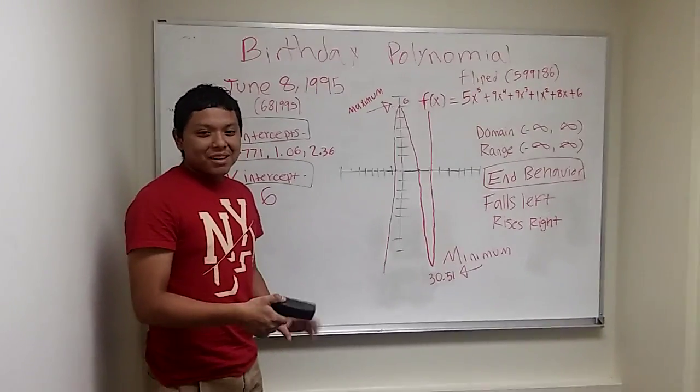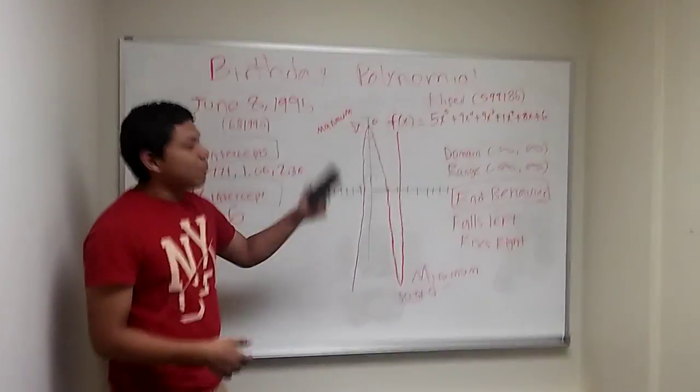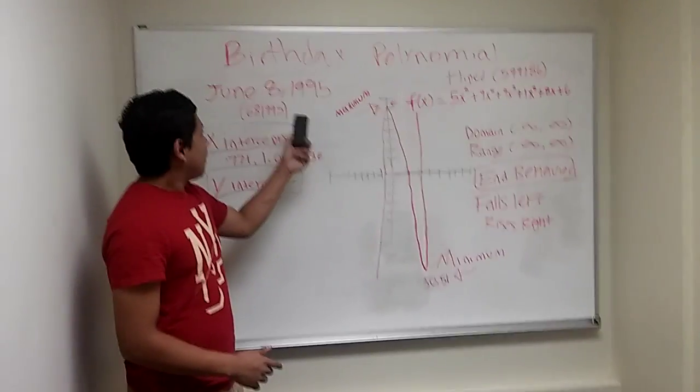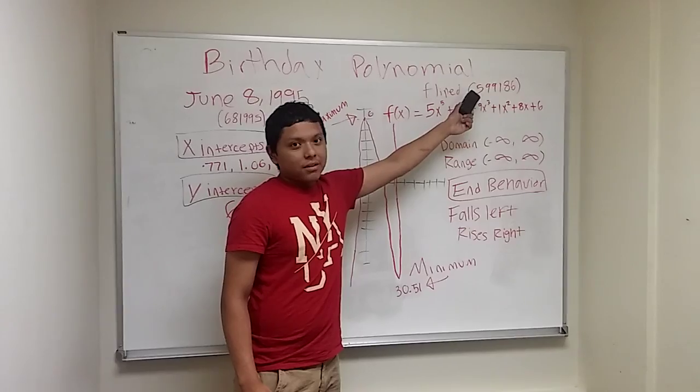Hello, my name is Elisao Gregorio, and I'm presenting my birthday polynomial project. I was born June 8, 1995, and this is my numbers flipped.